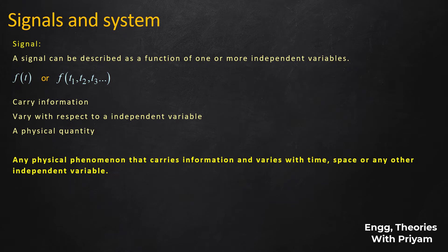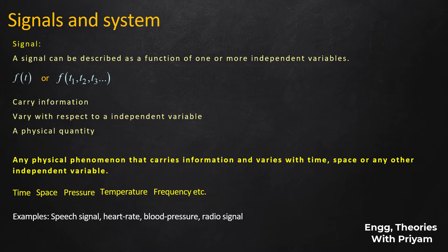A signal can be defined as any physical phenomenon that carries information and varies with respect to time, space, or any other independent variable. Examples of independent variables are time, space, pressure, temperature, and frequency. Some examples of signals are speech signal, heart rate, blood pressure, and radio signal. Speech is a signal because it varies with respect to time and carries information related to communication. Heart rate is a signal because it varies with time and gives information about the number of times the heart pumps in one unit of time.